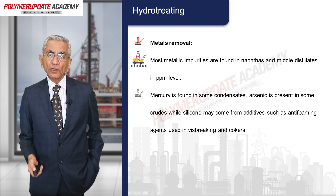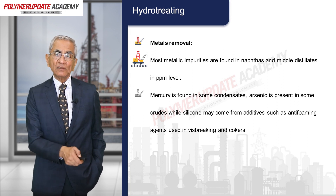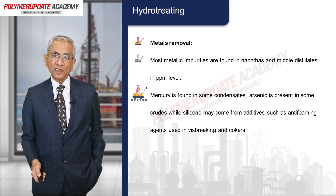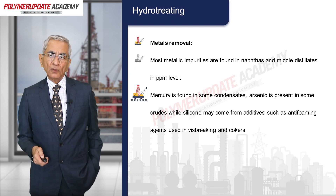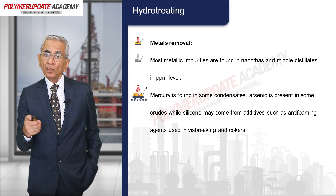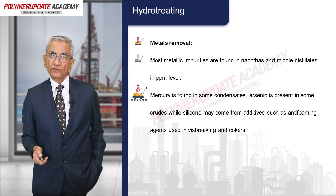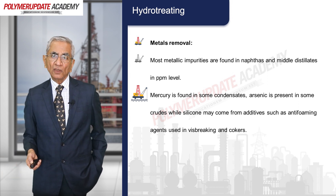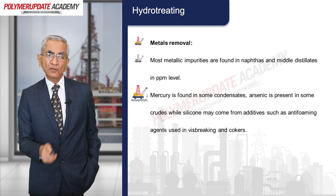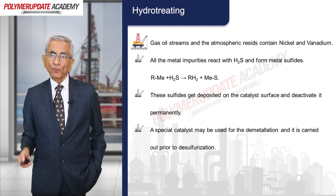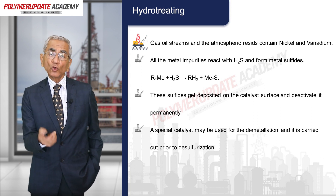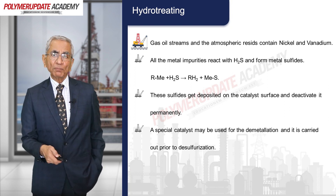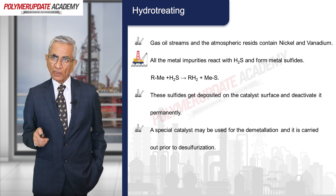Regarding metal removal, most metallic impurities are found in naphthas and middle distillates at ppm levels. Mercury is found in some condensates, arsenic is present in some crudes, and silicone may come from additives such as anti-foaming agents or materials used in visbreaking and coking. Metallic compounds may be present in the feed, come from additives, or arise from other impurities. Gas oil streams and atmospheric residues contain nickel and vanadium from catalysts used in those processes.